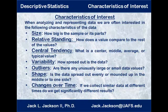Measures of central tendency try to find or describe, usually with a single number, the center, middle, average, or typical value. Variability measures how variable — or its opposite, how consistent — data is; how spread out it is. Outliers are unusually large or small data values. Do we have any of these, and if so, what are they?